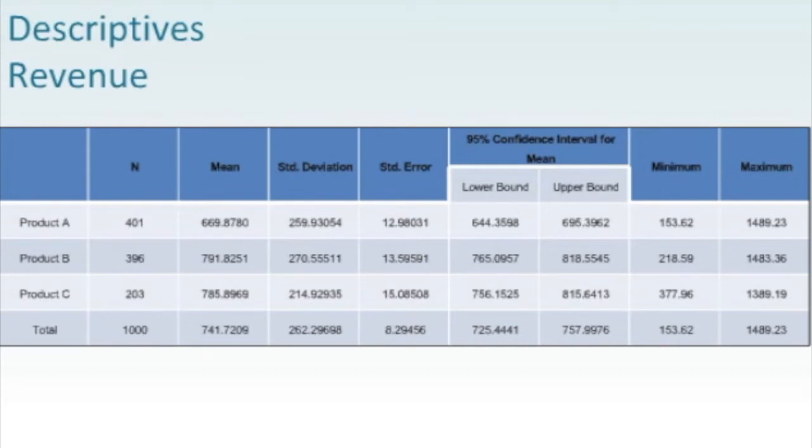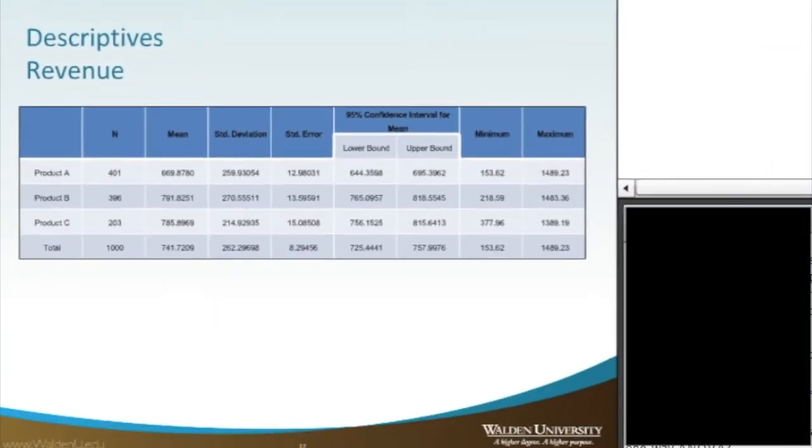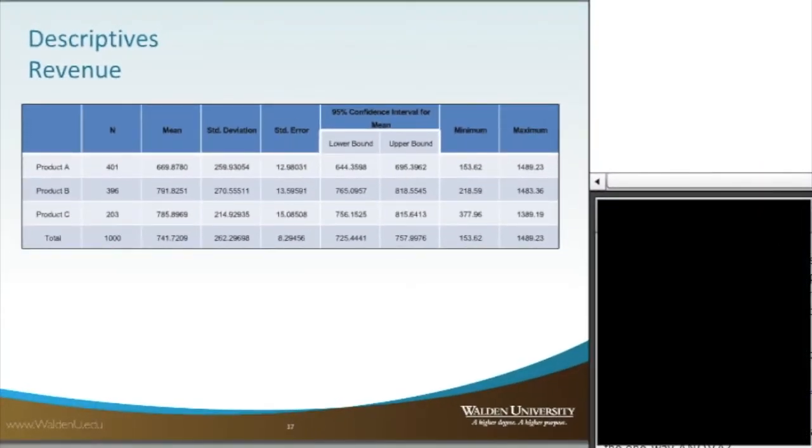And then, of course, we get the mean for each in terms of revenue, we get a standard deviation for the sample, the standard error of the mean, we get the 95% confidence interval of the mean itself, and then we also get the minimum and maximum for each of the revenues of each product, so that's nice as well.